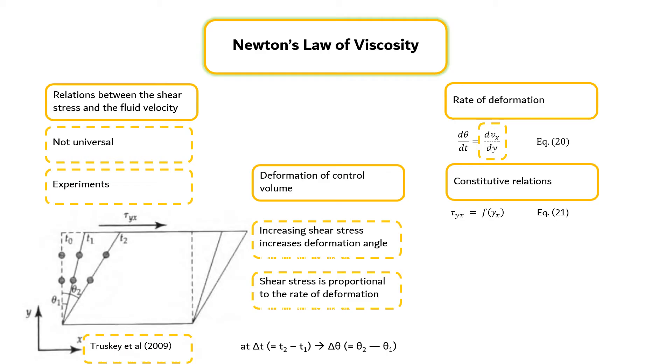Data are needed to specify the form of equation 21 for a particular fluid. The simplest possible relationship obeyed by many fluids is a linear relation between shear stress and shear rate, as given by equation 22, where mu is the coefficient of proportionality viscosity. Fluids that obey equation 22 are known as Newtonian fluids, and the equation is often referred to as Newton's law of viscosity.